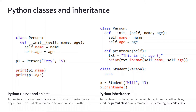To instantiate a Student object, we use the same parameters as Person — for example 'x = Student('willh13', 13).' Because Student inherits from Person, it has access to the print_name method defined in the parent class even though it's not defined in Student itself. Calling 'x.print_name()' will output 'This is willh13.'